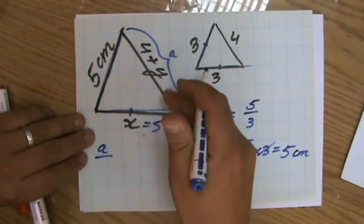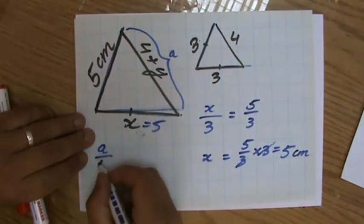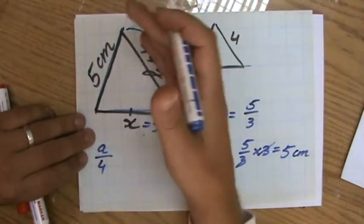A over the corresponding side in the other triangle. Four. Yeah. And A is going to be more than four. Yeah. Because this is a bigger triangle.